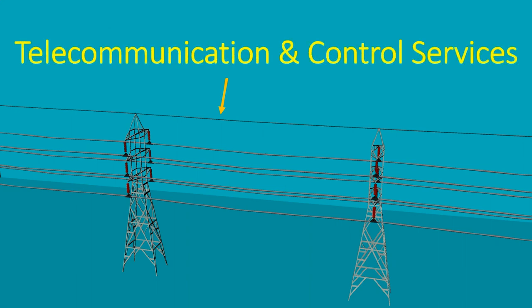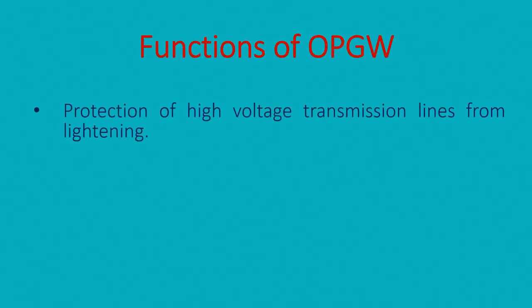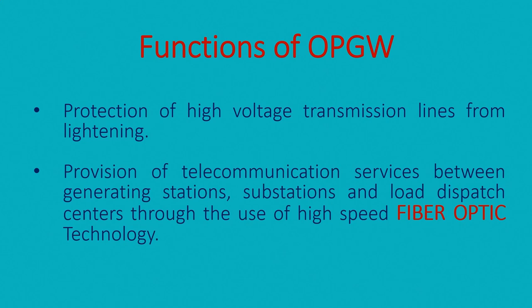Now we explain OPGW. OPGW stands for Optical Ground Wire. OPGW has been designed to replace traditional earth wire with the addition of provision of telecommunication and control services for the grid stations as well.